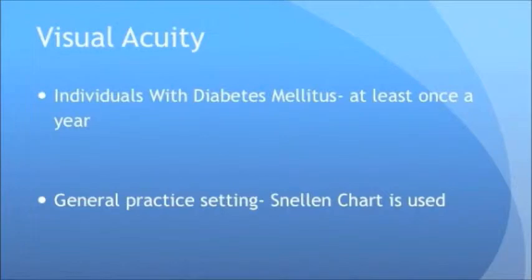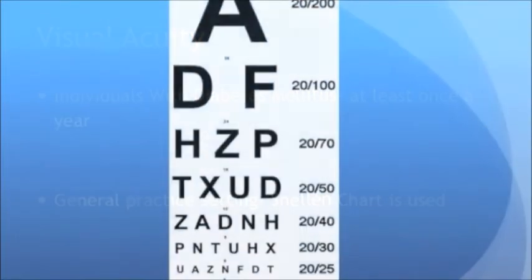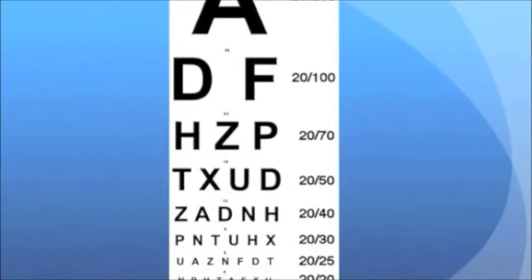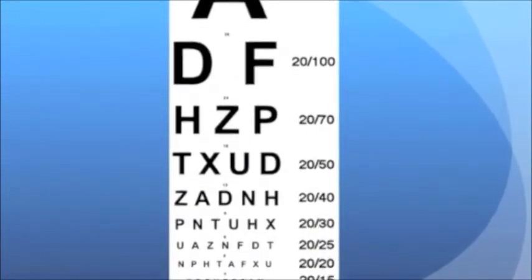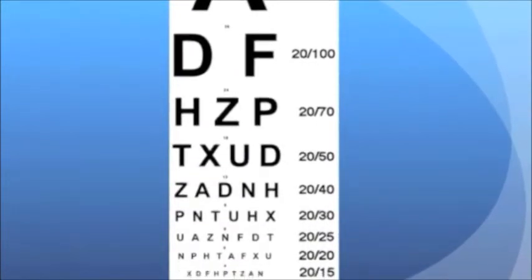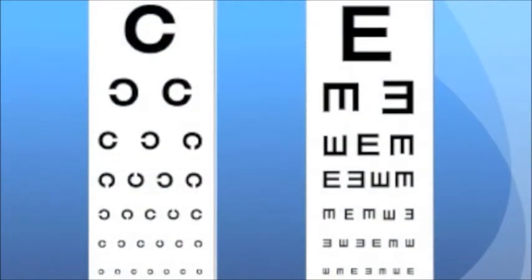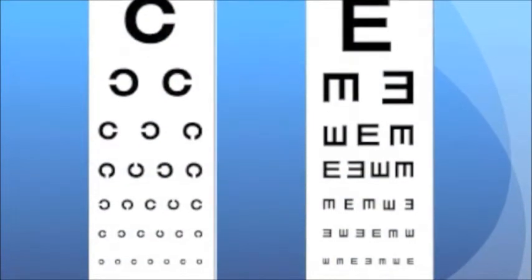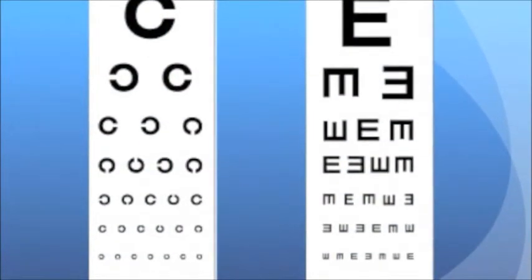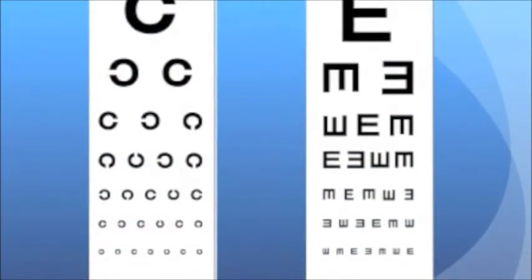To test visual acuity in a general practice setting, a Snellen-type chart is used. There are several variations of this chart using different kinds of optotypes. For example, an E chart is useful for patients who are not familiar with the Roman alphabet.